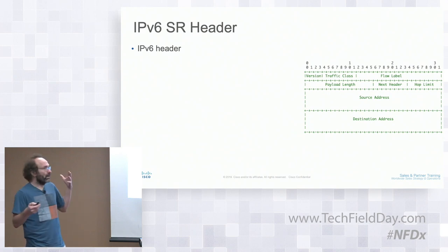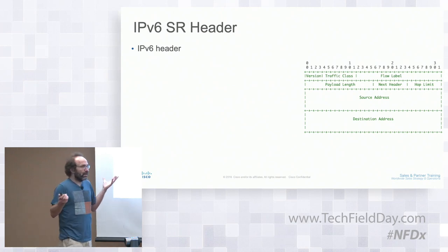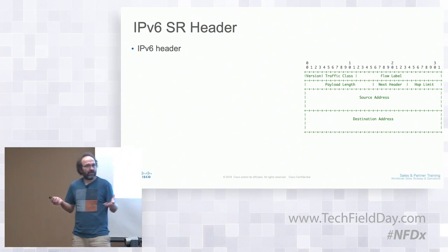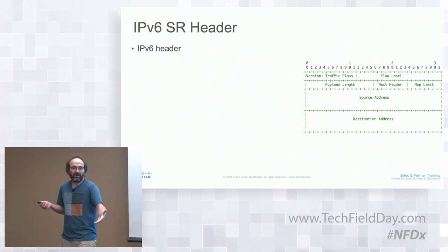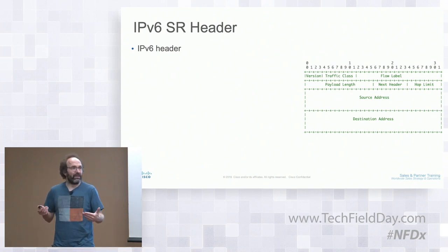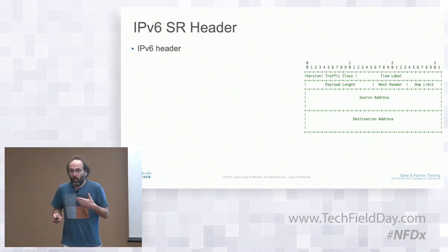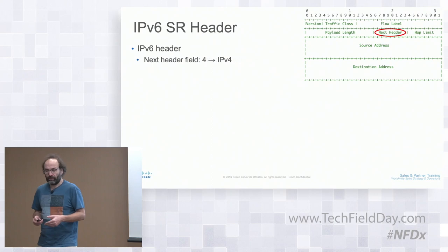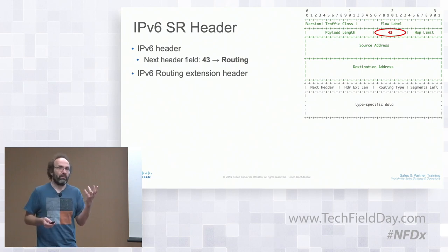In the IPv6 header, the most important field is the destination IP address. The second most important field is next header, which points to whatever is beyond the IPv6 header—TCP, UDP, IPv4, IPv6, or even layer 2. You can encapsulate IPv4, layer 2, or another IPv6 inside IPv6. Next header type 43 is the routing header, important for SRV6.